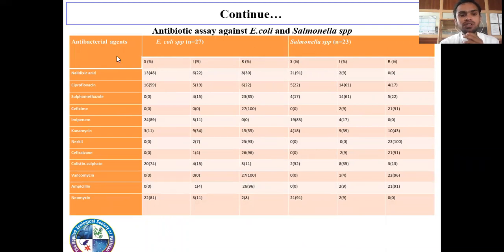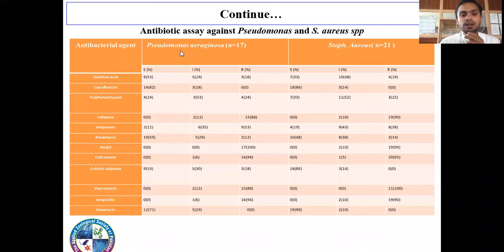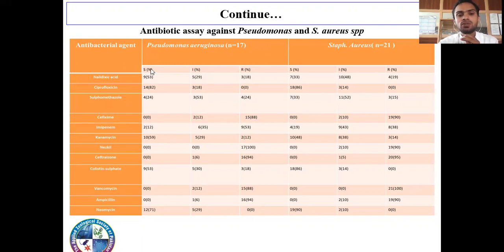Antibiotic assay against E. coli and Salmonella species. The antibacterial agents tested include imipenem, nalidixic acid, ciprofloxacin, sulfamethoxazole, cephalexin, and others. S shows the sensitivity ratio, I shows the intermediate ratio, and R shows the resistance ratio against these antibacterial agents. For Pseudomonas and Staphylococcus species: Pseudomonas had a total of 17 isolates and Staphylococcus had 21 isolates. S shows sensitivity, I shows intermediate, and R shows resistant. These are the sensitive, intermediate, and resistant isolates against these antibacterial agents.